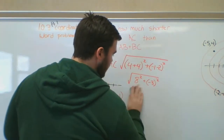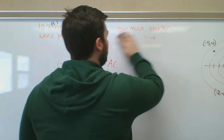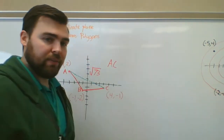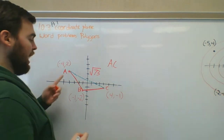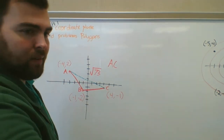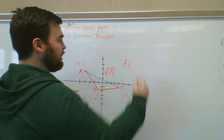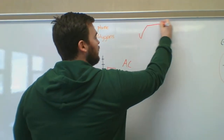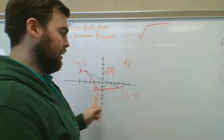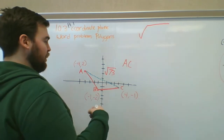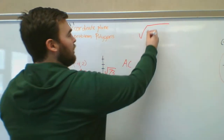Now I need to find how far it is from A to B and from B to C. I'll use the distance formula twice. Go ahead and find the distance between A and B, then between B and C — pause the video and do that now.